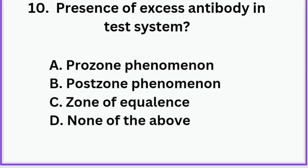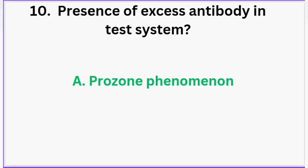Presence of excess antibody in a test system: Option A: Prozone phenomenon, Option B: Postzone phenomenon, Option C: Zone of equivalence, Option D: None of the above. The correct answer is prozone phenomenon. If antibody is in excess, it is called the prozone phenomenon.